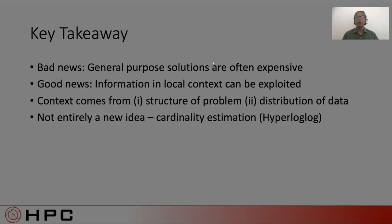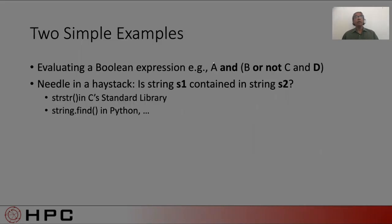As one who has been responsible for more bugs than I'd care to admit, I'm highly biased towards picking solutions with low complexity, both in terms of implementation and maintenance. I'm going to illustrate this point with two simple examples that are as old as the hills. The first is evaluating a Boolean expression. As an example, A and B or not C and D, where A, B, C, D are expressions that evaluate to true or false. The other is the problem of determining whether and where a string S1 is contained in a string S2.